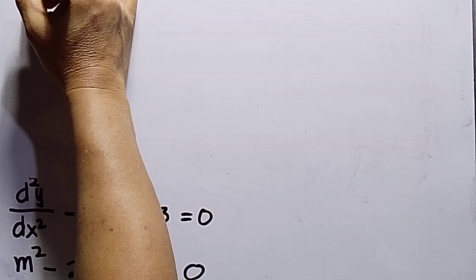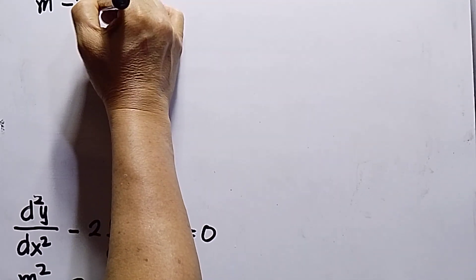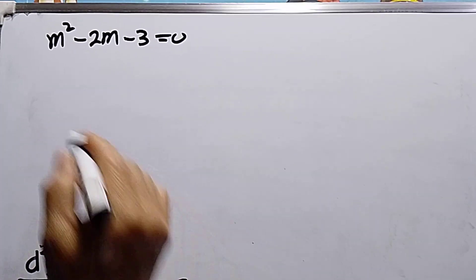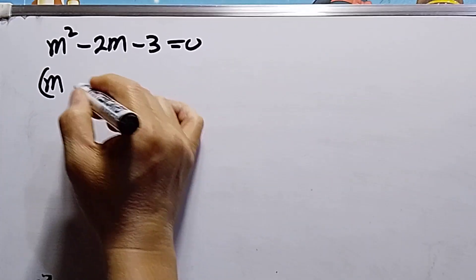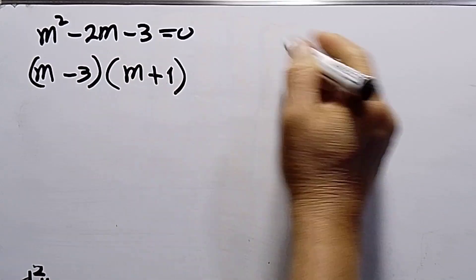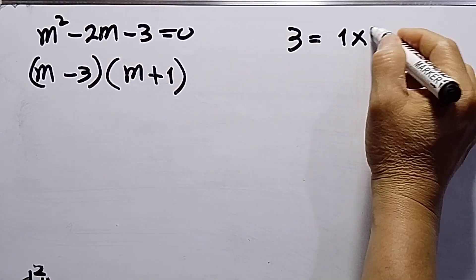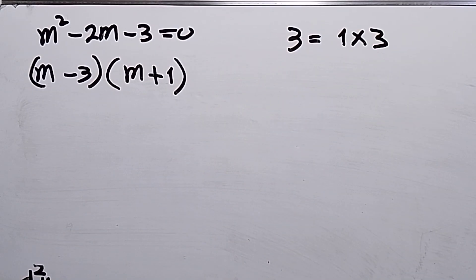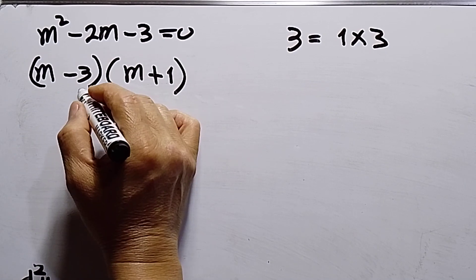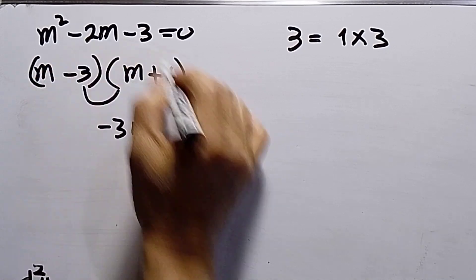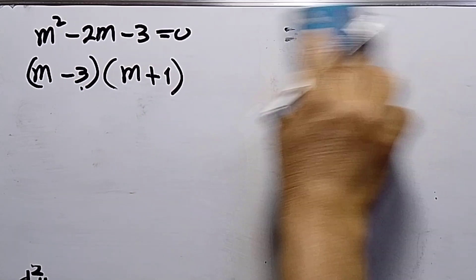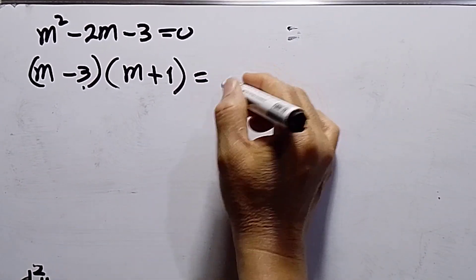Factoring m squared minus 2m minus 3 equals zero. Using algebra, this factors as (m minus 3)(m plus 1), because the factors of 3 are 1 and 3. Since the middle term is negative, the greater number takes the negative sign: negative 3m plus m gives negative 2m. This is correct.